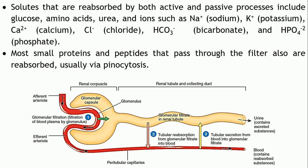Solutes are reabsorbed either by active processes or passive processes. Active transport requires energy in the form of ATP and moves substances against the concentration gradient, whereas passive processes require no energy and move substances along the concentration gradient. Different types of transporters may be utilized for the reabsorption of specific solutes.